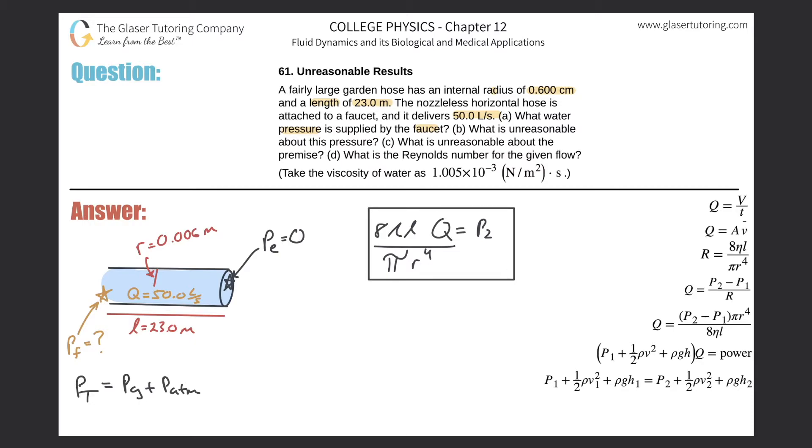So now all we have to do is just plug in the values. Remember, P2 is really the gauge pressure of the faucet. Do we know everything? Do we know the viscosity of the fluid? Well, what fluid are we talking about? We're talking about water, so we know the viscosity of water. The length of the tube they told us is going to be 23 meters.